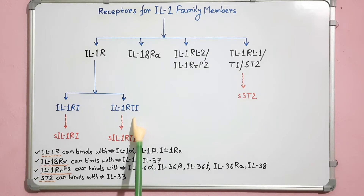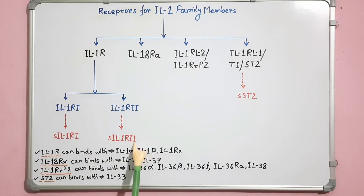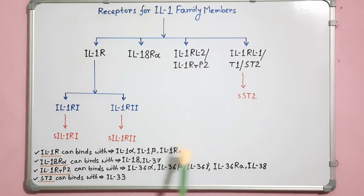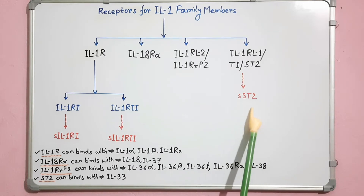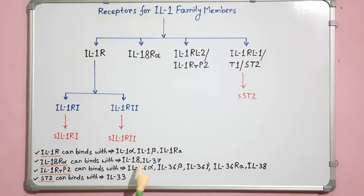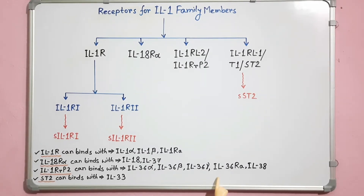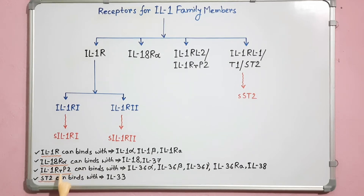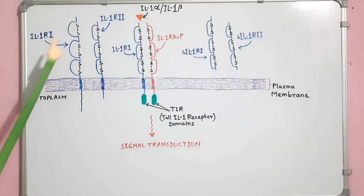IL1R2 acts as an IL1R1 inhibitor. Shown here are the soluble forms of IL1R1 and the soluble form of ST2. IL-1 alpha, IL-1 beta, and IL-1RA interact with IL1R. IL-18 and IL-37 interact with IL18R alpha. IL-36 alpha, IL-36 beta, IL-36 gamma, IL-36RA, and IL-38 interact with IL1RRP2 receptor.